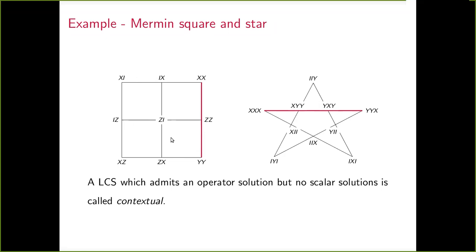In the Mermin square, the unitary matrices are 4×4 (tensor products of Pauli matrices), and in the Mermin star they are 8×8. These two examples don't admit a scalar solution but they do admit solutions over the unitary group. I will come back to these examples from time to time.